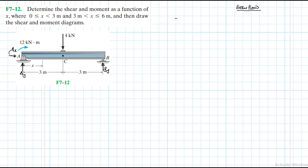Let's apply the equations of equilibrium. Summation of moments about point A equal to 0, with anticlockwise being our positive reference. We have minus 4 — since this is a clockwise moment — then minus 4 times 3, then plus By times 6 equal to 0.